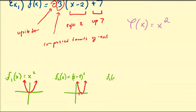Now for f3(x), let's flip it upside down and compress it: f3(x) = -3(x-2)². That's going to have the same vertex, but it's going to be flipped upside down and compressed towards the center axis.